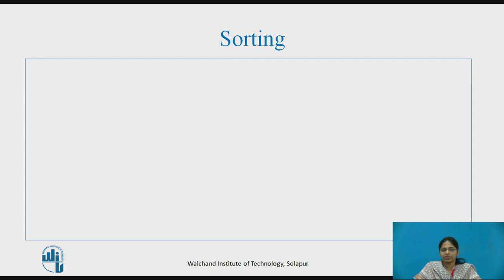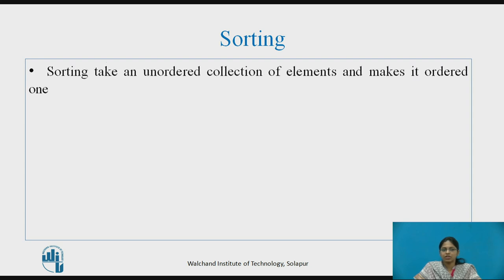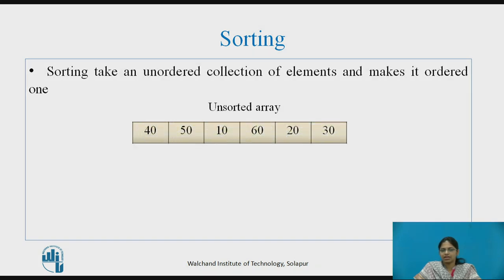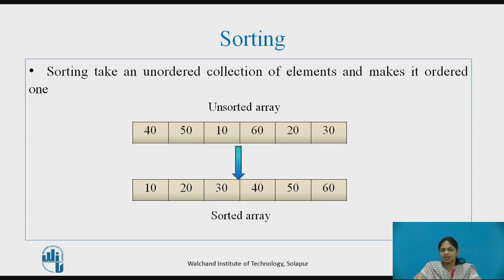Let us see what sorting is. Sorting takes an unordered collection of elements and makes it an ordered one. For example, this is an unsorted array where the elements are unordered. So after sorting, the elements become ordered and this is nothing but a sorted array.